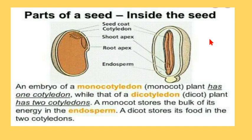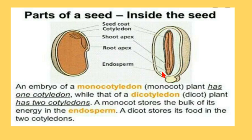Now you can see a comparison between a dicot seed and a monocot seed. Monocotyledonous plants have seeds with one cotyledon — that's why they are called monocot. Dicot seeds have two cotyledons. The difference between monocotyledon and dicotyledon is first the presence and absence of cotyledons, and second is endosperm — in monocot seeds, endosperm provides nutrients to the growing embryo.